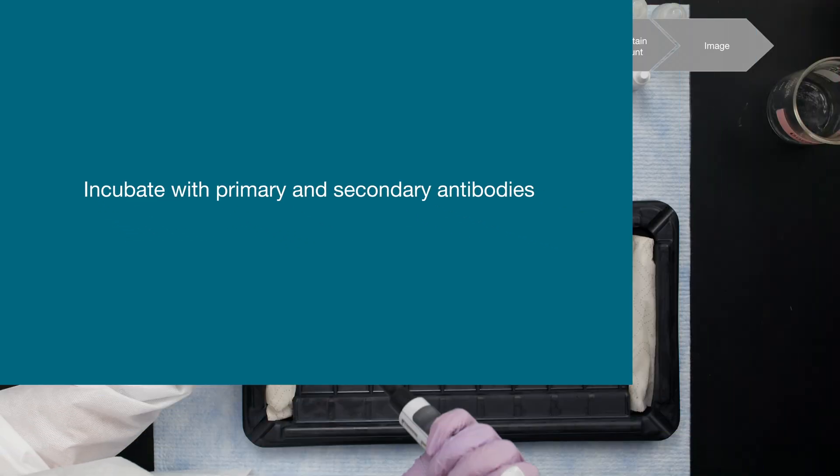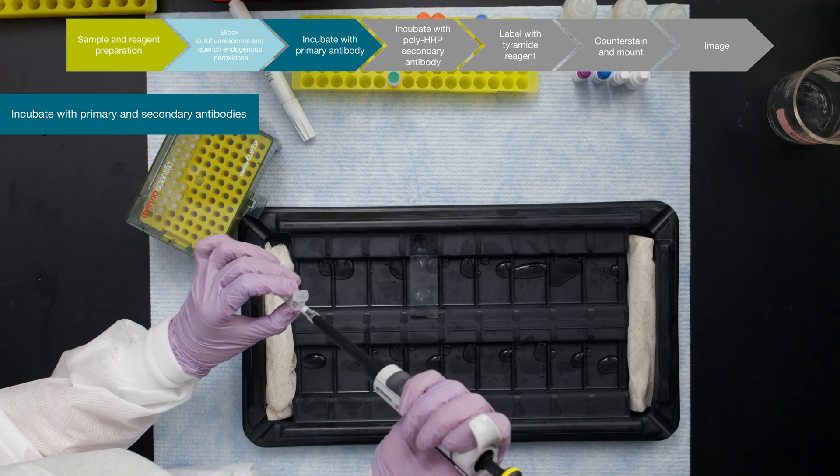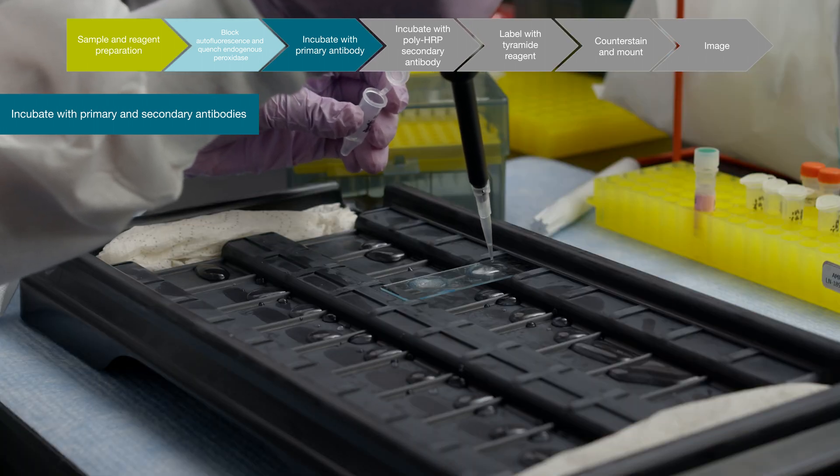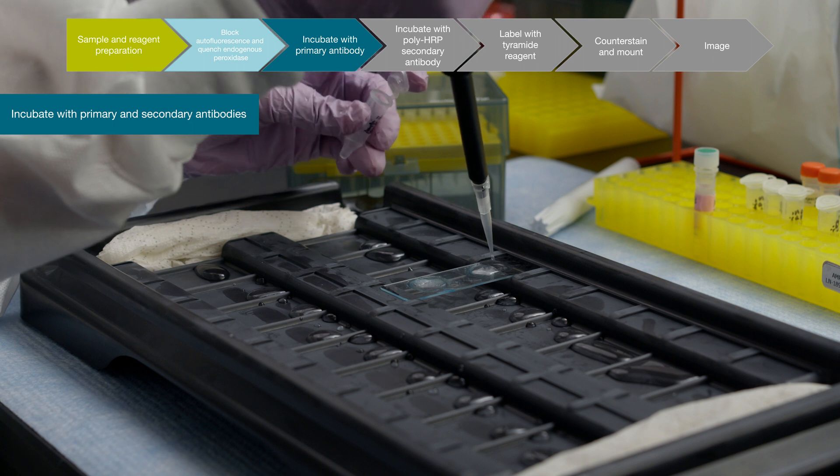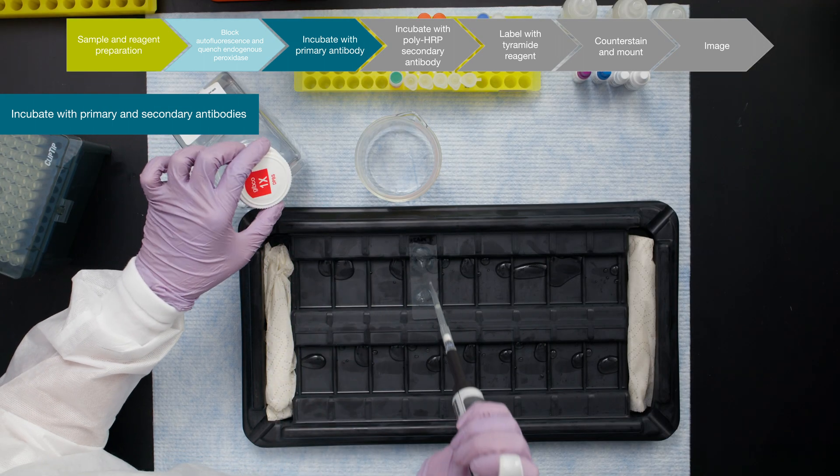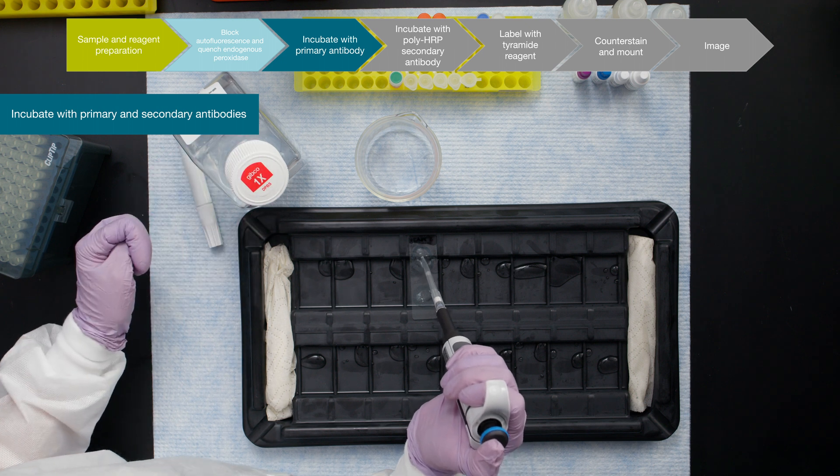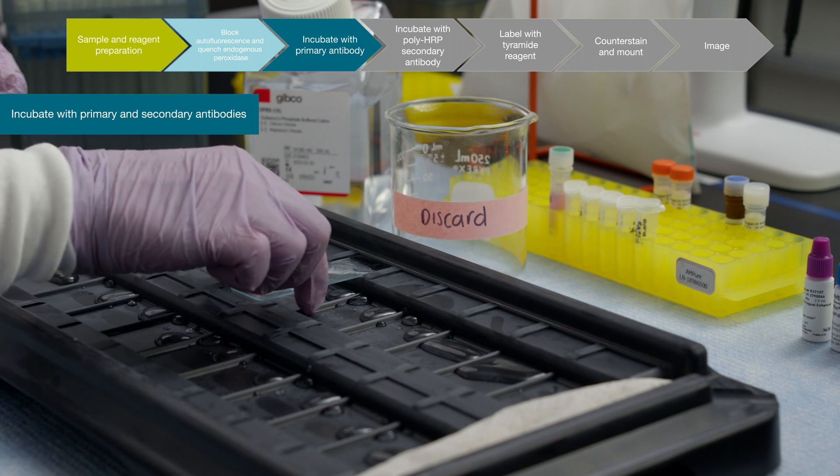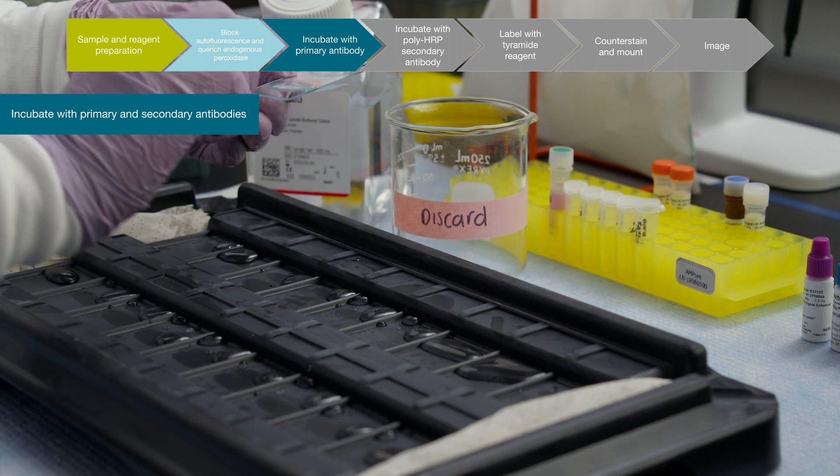Sequentially label with primary antibody and poly-HRP secondary antibody. Like traditional antibody staining, incubations with the primary antibody can be done for 30 to 60 minutes at room temperature, or overnight at 2 to 8 degrees Celsius in a humid chamber. After incubation, wash with 1X PBS three times before adding the secondary antibody.